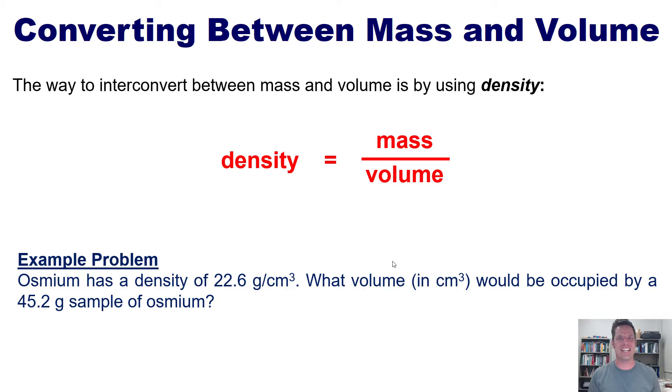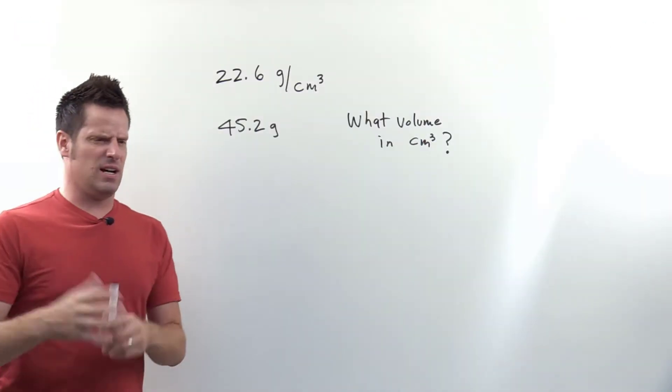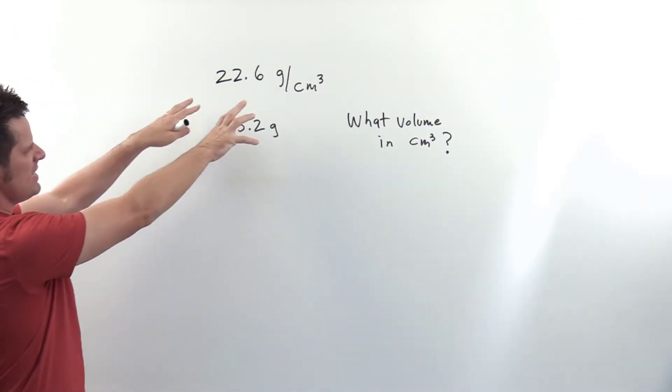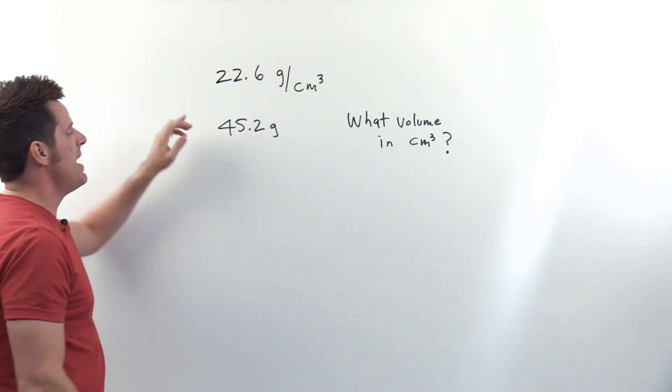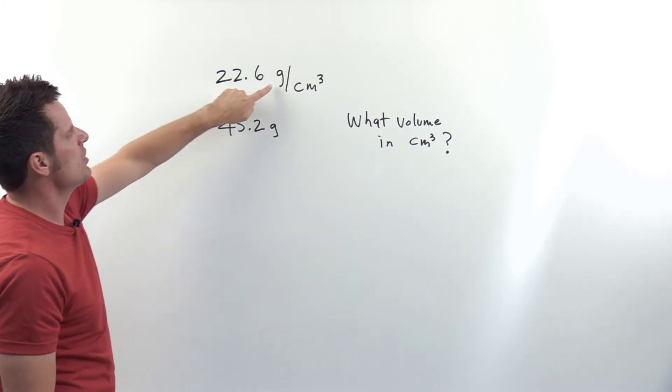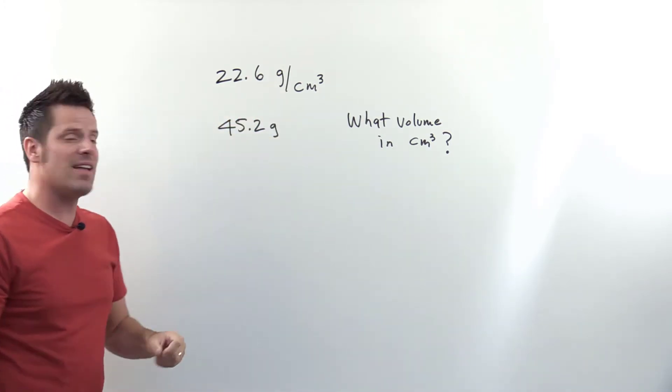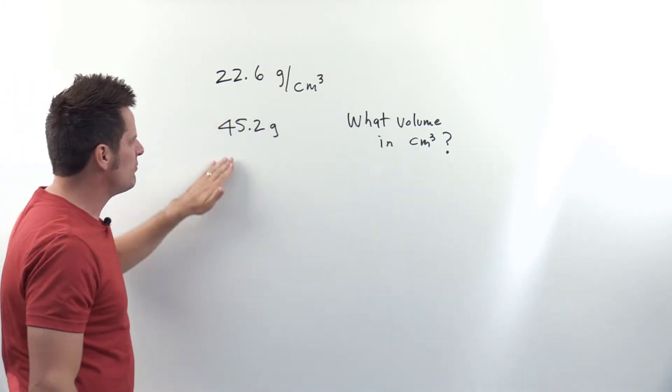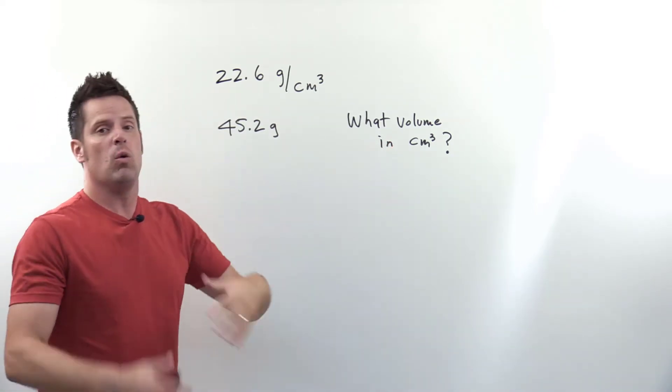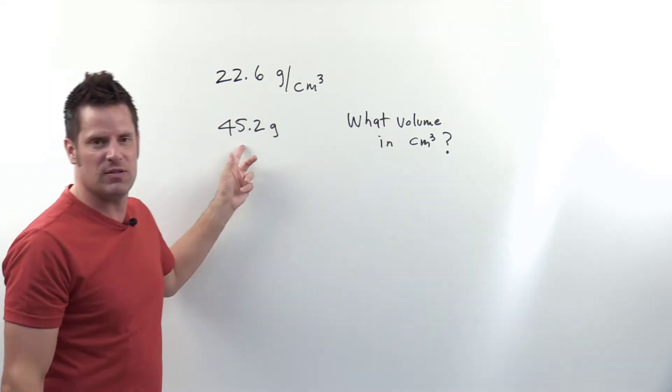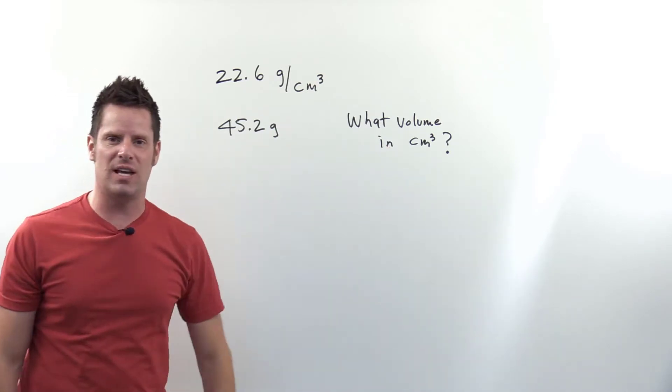To try to keep this question a little bit simpler than the way it's originally worded, I just extract out from the question the key pieces of information. It tells me that the sample of osmium has a density of 22.6 grams per cubic centimeter, and that we have a specific amount of osmium, 45.2 grams. It then asks us what volume would this 45.2 grams of osmium occupy in cubic centimeters.